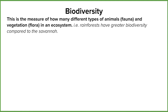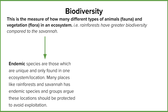But why is it important to have a rich biodiversity? Well, there are two key reasons. The first is this idea of endemic species. Endemic species are ones that are only found in that particular ecosystem, or that significantly small particular area of an ecosystem. Many places like the rainforest and the savannah will have species of plants and animals that you can find nowhere else in the world, and lots of people believe that these endemic species need protection and need to avoid exploiting the ecosystem in order to do so.